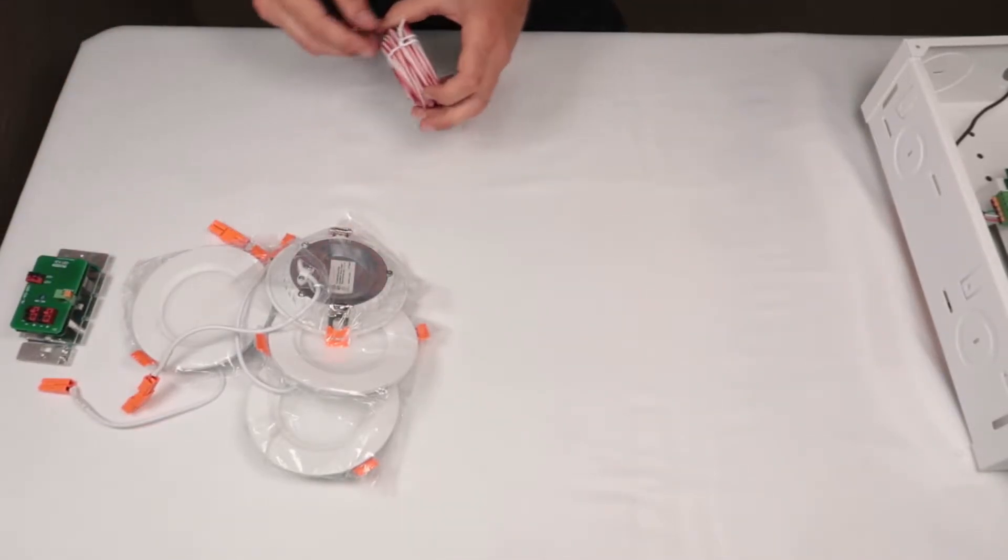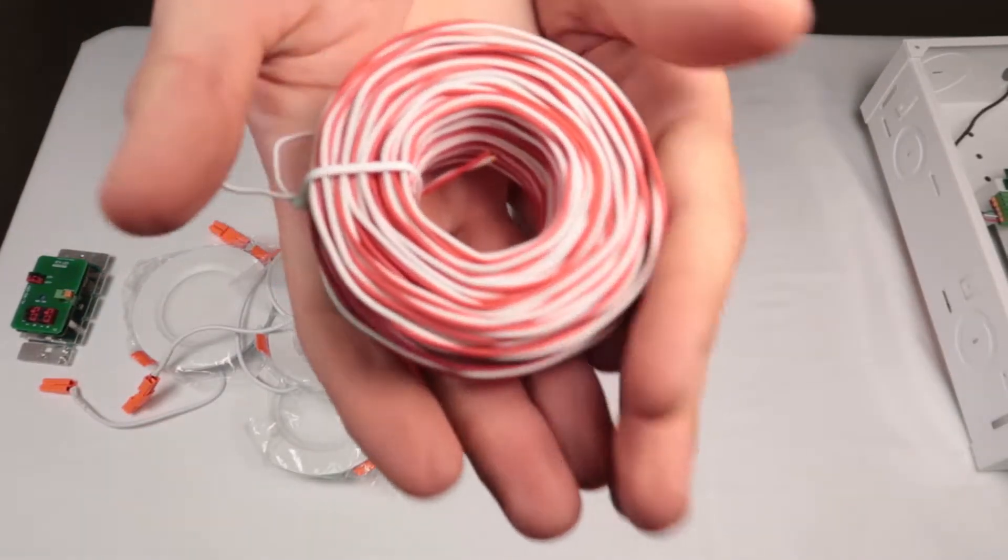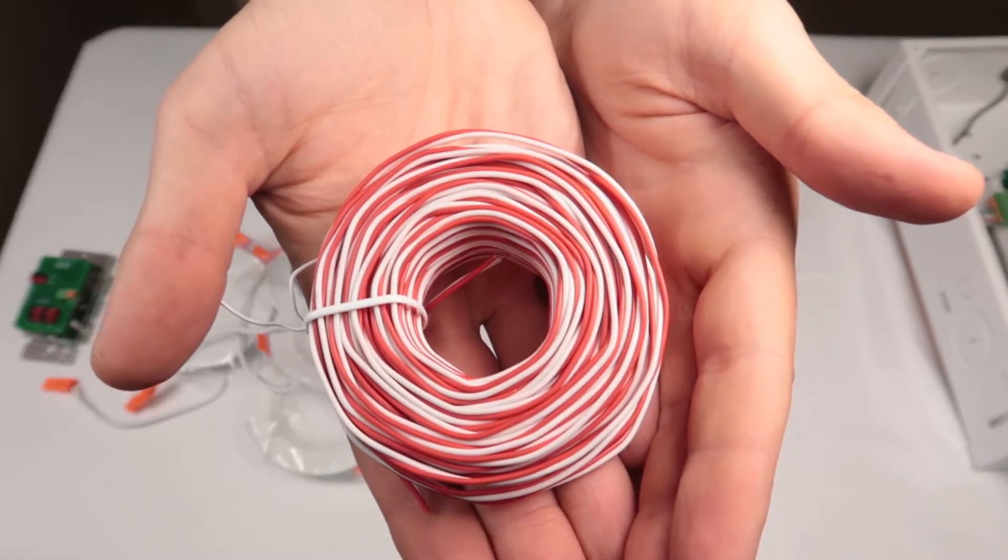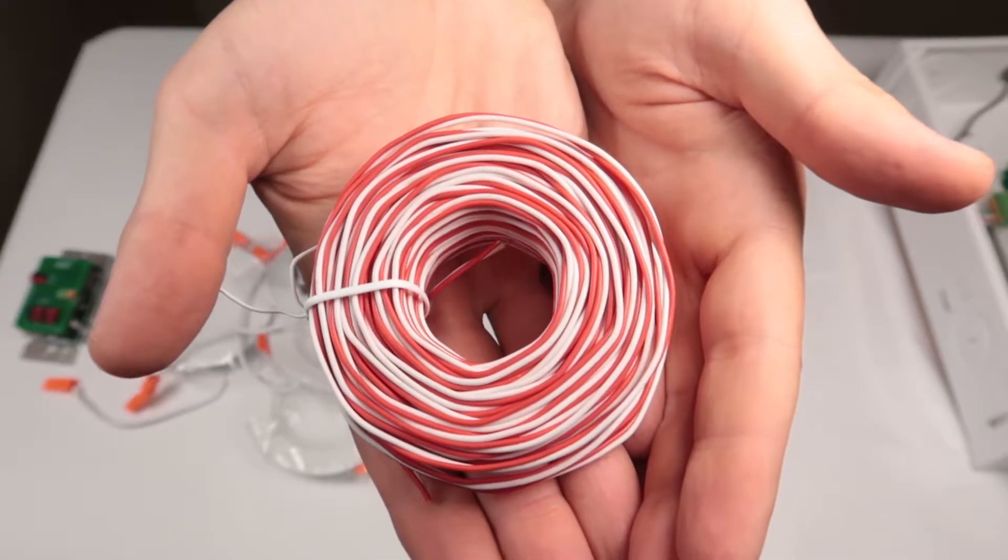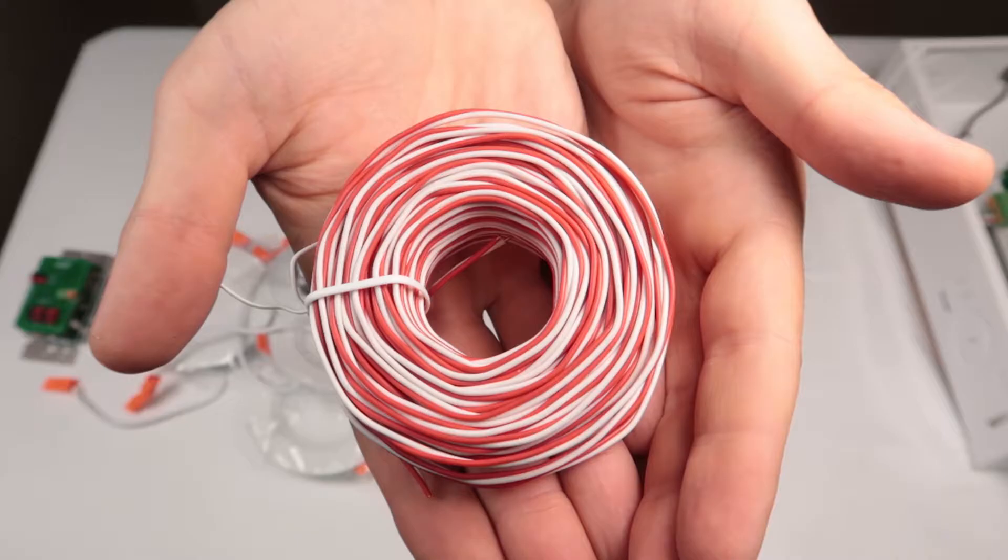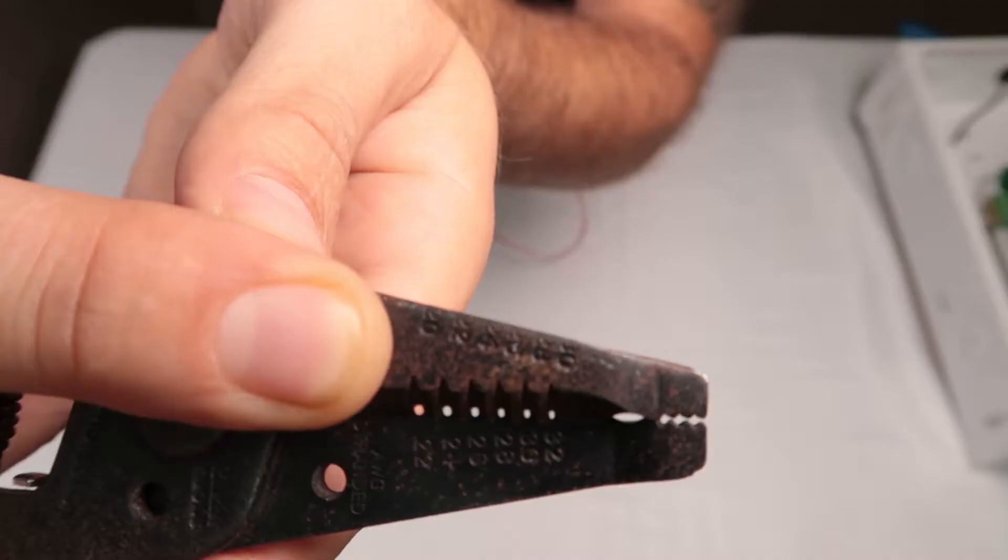20-gauge 2-conductor wire is used for our lighting circuits, meaning any connection from the switch to the lights and between lights. Do not use 20-gauge to carry power to your switch. Please use the correct notch on your strippers to prevent marring the copper wire, which may lead to breakage later.